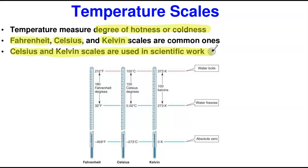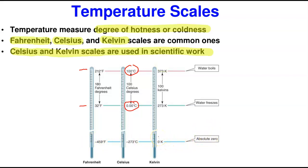The basic thing we need to understand is how to use different temperature scales and convert between them. The Fahrenheit scale has the boiling point of water at 212°F and the melting point of water at 32°F. In the Celsius scale, water boils at 100°C and freezes at 0°C. In the Kelvin scale, water boils at 373 K and freezes at 273 K. The Kelvin scale doesn't use a degree sign — just K. Zero Kelvin is called absolute zero, the theoretical point where all matter has no motion.